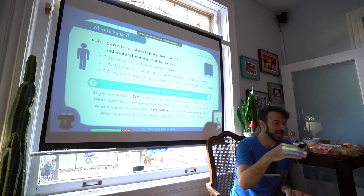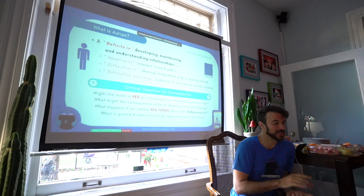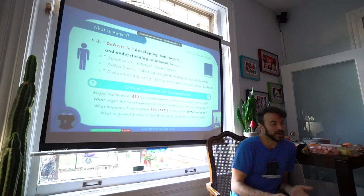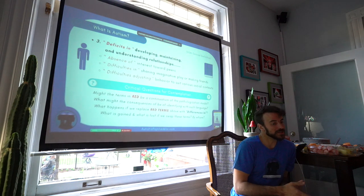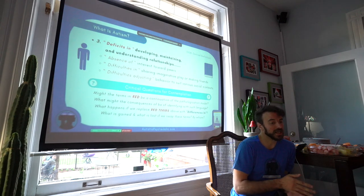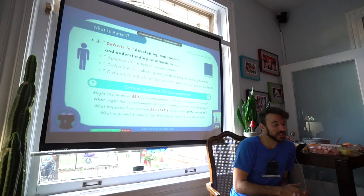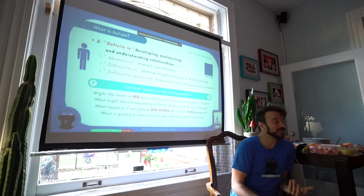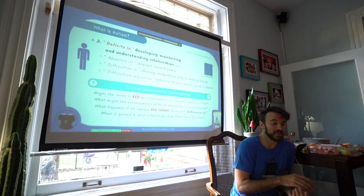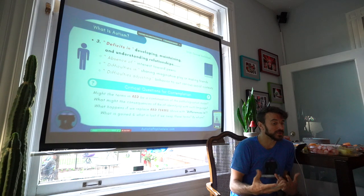So again, two out of these three categories, which also includes deficits in developing, maintaining, and understanding relationships, absence of interest towards peers, difficulties in sharing imaginative play or making friends, and difficulties adjusting behaviors to suit context. So the question here at the bottom reads, might the terms in red be a continuation of the pathologization model? And what might the consequences of identifying with such language be?